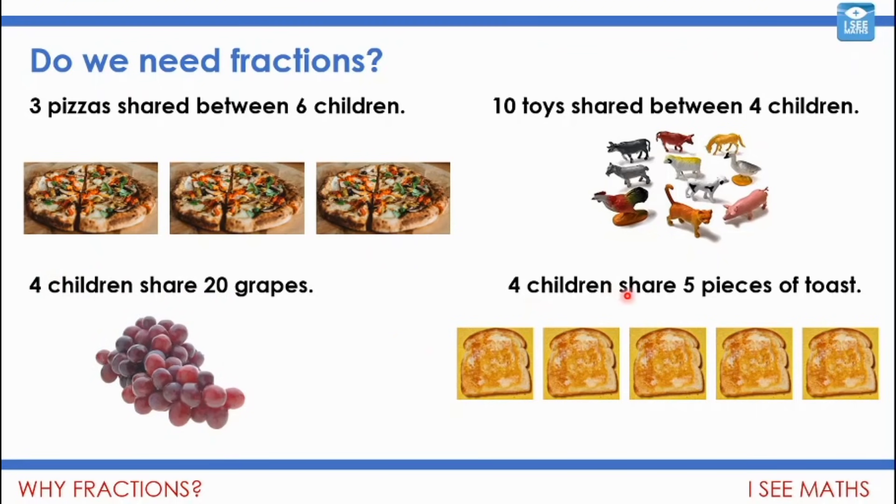Well, what about four children share five pieces of toast here? Well, for this one, I think that we'd end up with each child would have a piece of toast. We'd have one whole. One, one, two, three, four. One for each child. And then this piece of toast, we could split this one up as well. We could split that one into quarters. So each child would get one and a quarter pieces of toast.